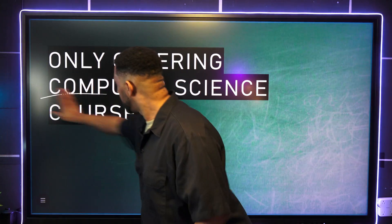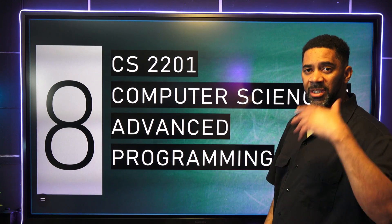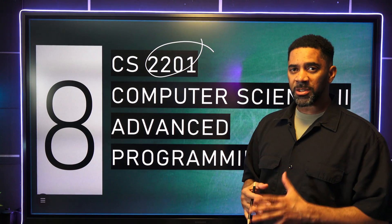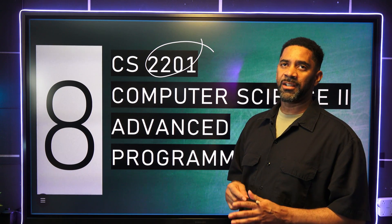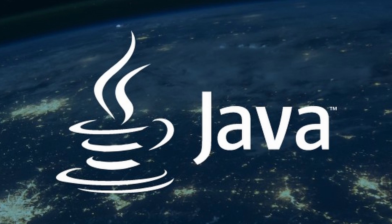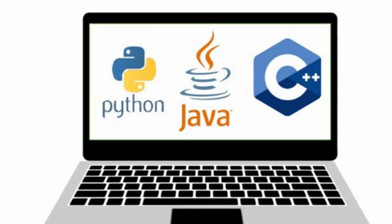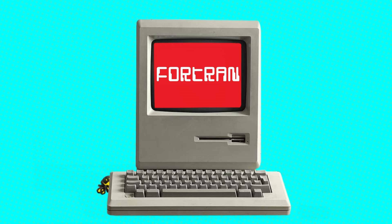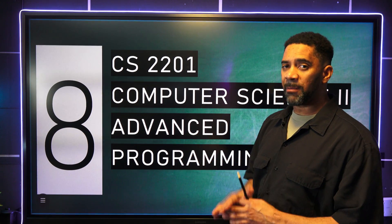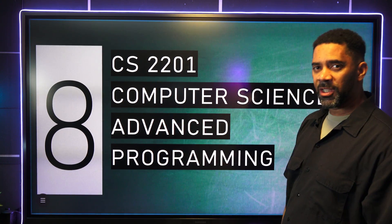Number eight is the second programming course, normally numbered in the 2000s. This course teaches sorting and advanced basic algorithms, with programming in Java, C++, Python, and other high-level languages. It appears on this list because if you're not coming from a computer science background and you've just learned to code, this is going to be a difficult course, so you have to take your time and work hard to pass it.